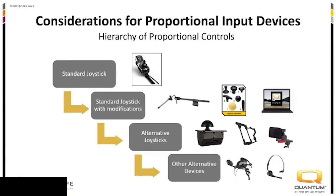There are really three categories of modifications for the standard joystick. One is changing the handle or top shape — power wheelchair manufacturers allow you to remove the standard handle and put on different shapes like a goalpost or a ball shape. We can also change the mounting, moving where the device is positioned. And my favorite part is the programming — there are specific programming features where, maybe they're not able to utilize the standard joystick, but with certain programming changes, they can.